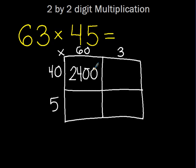You multiply 60 times 5. 60 times 5 is 300. How do I know that? Because 5 times 6 is 30, but it's really 60 times 5, so it's 300.